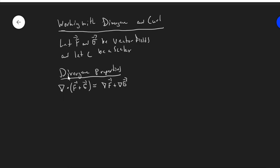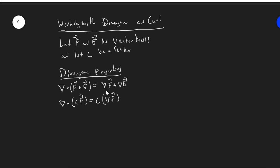To really establish that this is a linear operator — the divergence is a linear operator — del dot a scaled version of a vector field is C times the divergence of the vector field. Here C is a constant scalar, not a scalar function.